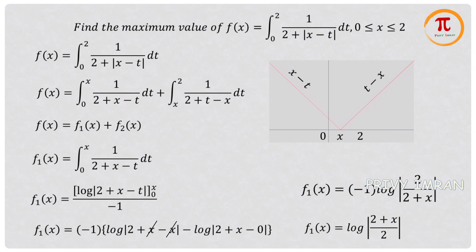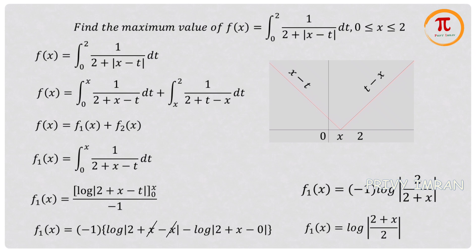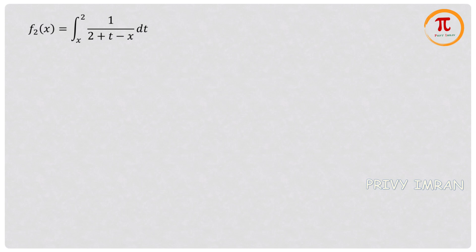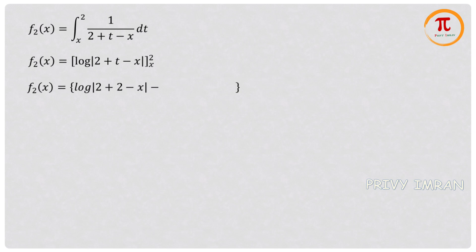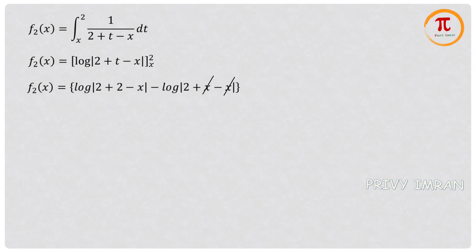The second function is ∫ₓ² 1/(2 + t - x) dt. Applying the integration and then upper limit minus lower limit, the +x and -x cancel again. Using log a minus log b equals log(a/b), the second function simplifies to log|(4 - x)/2|.